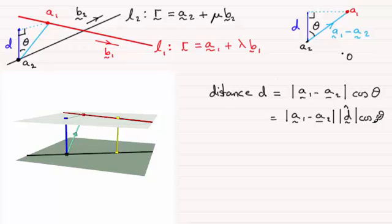Now this is the scalar product or dot product between two vectors. Those two vectors are the vector A1 minus A2, dotted with the unit vector D, D with a little circumflex there. And that distance D has to be positive, so what I'll do is I'll put a mod sign around the outside of that.